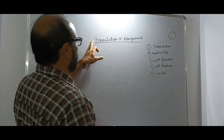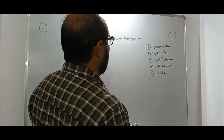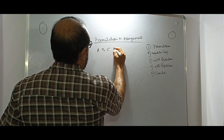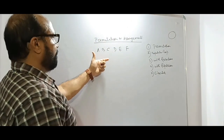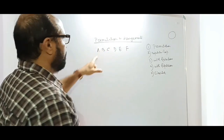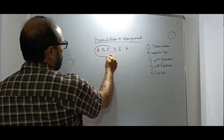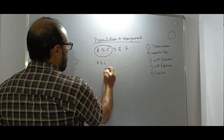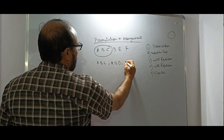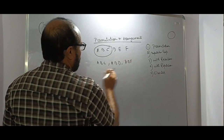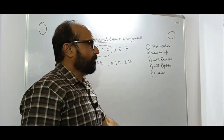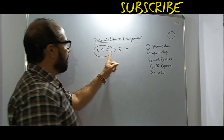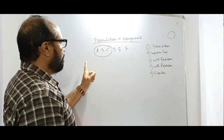Permutations — in simple terms it is called the arrangement. Arrangement means suppose you have six alphabets, and you have to arrange them by taking three at a time. So you would write A B C, you can write A B D, you can write A B E F, and so on. In how many ways can these six letters be arranged?